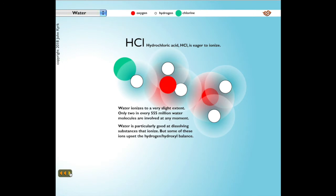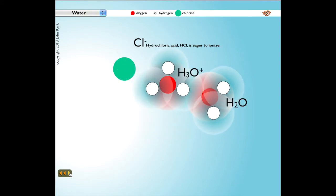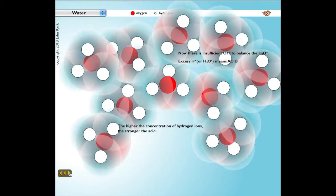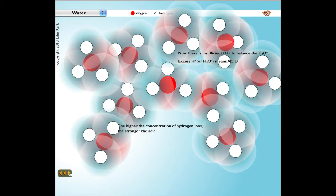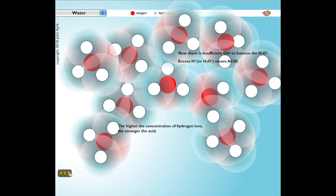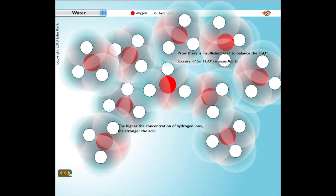Water is particularly good at dissolving substances that ionize, but some of these ions upset the hydrogen-hydroxyl balance. Hydrochloric acid, HCl, is eager to ionize. It donates its hydrogen to a neutral water molecule to form a hydronium ion. When many HCl acid molecules are added to water, each contributed hydrogen creates a new hydronium ion. Now there is insufficient hydroxyl to balance the hydronium. Excess hydrogen ions, or hydronium ions, means we have an acid. The higher the concentration of hydrogen ions, the stronger the acid.